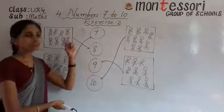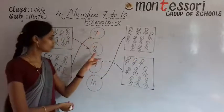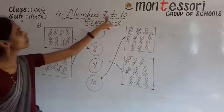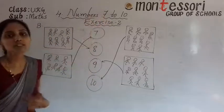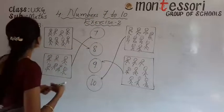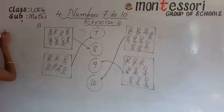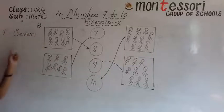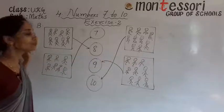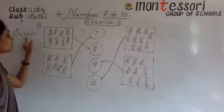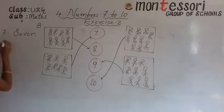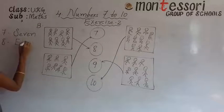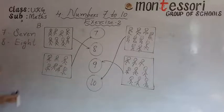The given numbers are 7, 8, 9, 10. What is the chapter name? Number 7 to 10. What is the spelling of 7? S, E, V, E, N — seven. What is the spelling of 8? E, I, G, H, T — eight.